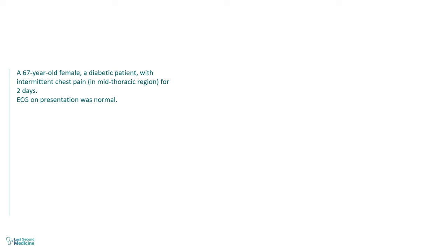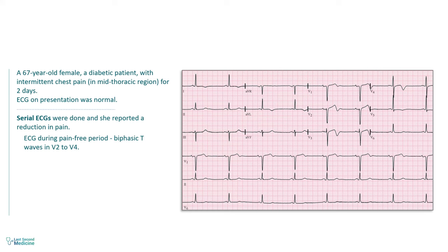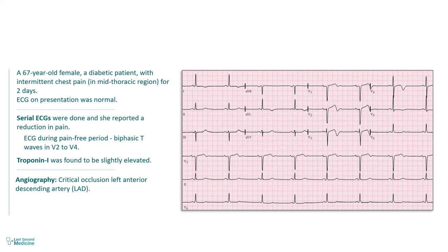The pain was located in the mid-thoracic region. ECG was normal. She was kept for serial ECG and she reported a reduction in pain. ECG taken during the painless period showed biphasic T waves in V2 to V4. Troponin I was found to be slightly elevated. Immediate angiography was done, and critical occlusion was observed at the left anterior descending artery. Balloon dilatation and stenting was done to the LAD, and the patient was discharged from the hospital without any complication.